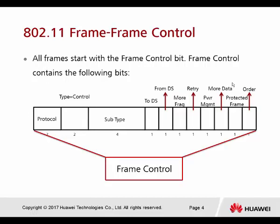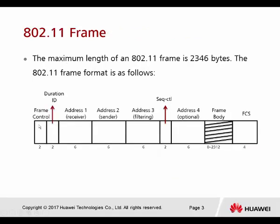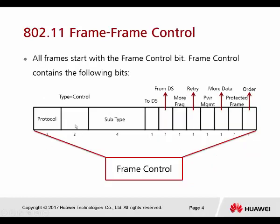Let's begin with the first field: frame control. Frame control is located at the front — the very beginning of the frame. It has 2 bytes, which becomes 16 bits. All frames start with the frame control bits. The frame control contains the following: 2 bits for the protocol, 2 bits for the type, and 4 bits for the subtype. The remaining 8 bits tell us where the frame is coming from.